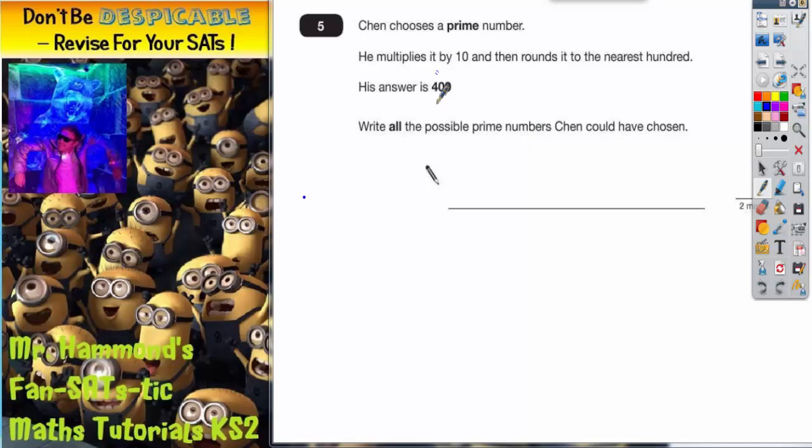We need to get a result of 400 when we've rounded to the nearest 100. So we need to decide what numbers would round to 400. Well, we're looking for numbers that lie between 350. Anything bigger than 350 is going to round up to 400, all the way up to 450.